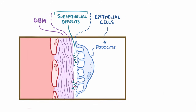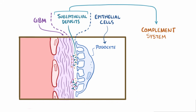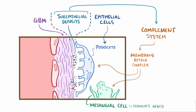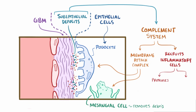These subepithelial deposits are thought to activate the complement system, which is a cascade of enzyme activation that ultimately produces the membrane attack complex, which directly damages both the podocytes as well as mesangial cells — the cells that work to remove trapped residue and debris. The immune reaction also recruits inflammatory cells that release proteases and oxidants, which damage the basement membrane and cause it to become leaky, allowing proteins to filter through into the urine, which causes the signs and symptoms of nephrotic syndrome.